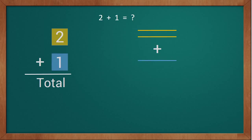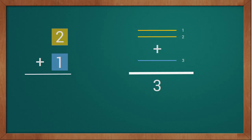Now we will count all together: 1, 2, 3. This way we got a total of 3 sticks, so our answer is 3. In this way we got the answer 3, so our addition of 2 plus 1 equals 3.